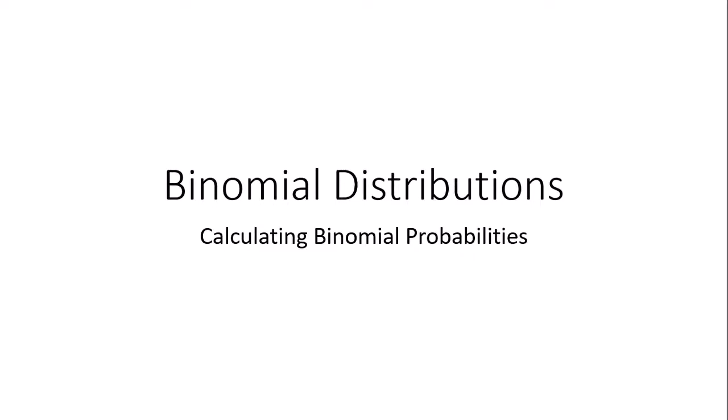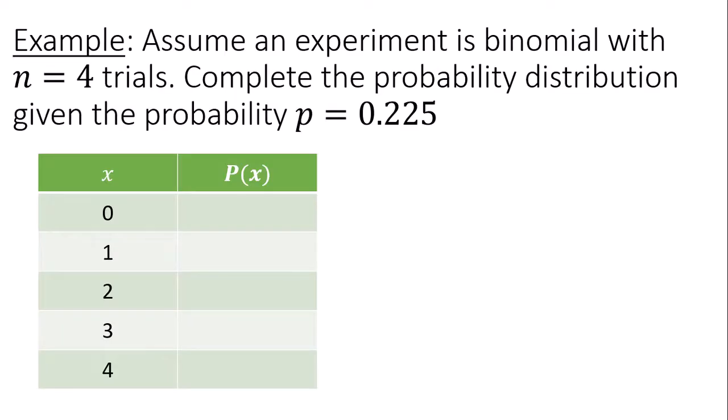This is a video on calculating binomial probabilities. Assume an experiment is binomial with n equals four trials. Complete the probability distribution given the probability p equals 0.225. So I'm going to complete the probability distribution by using the binomial region of the calculate tab in Google Sheets.